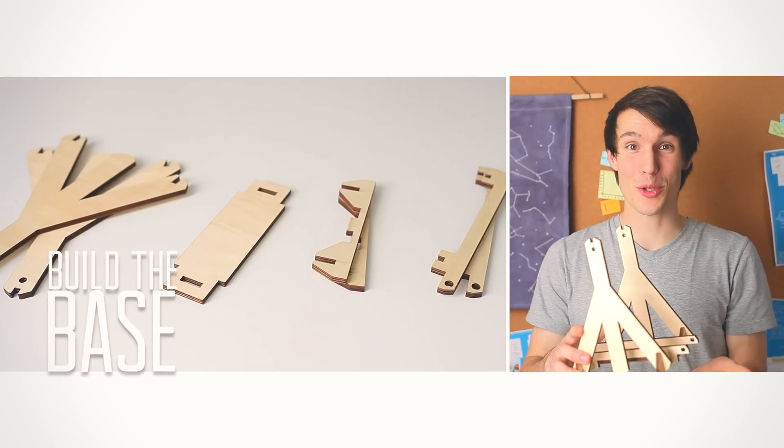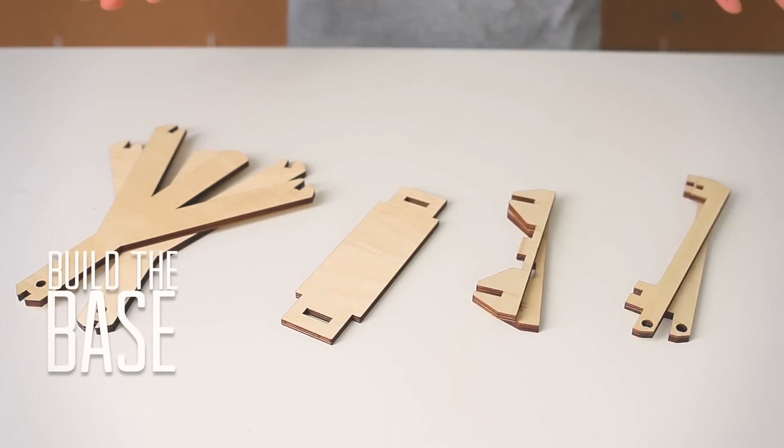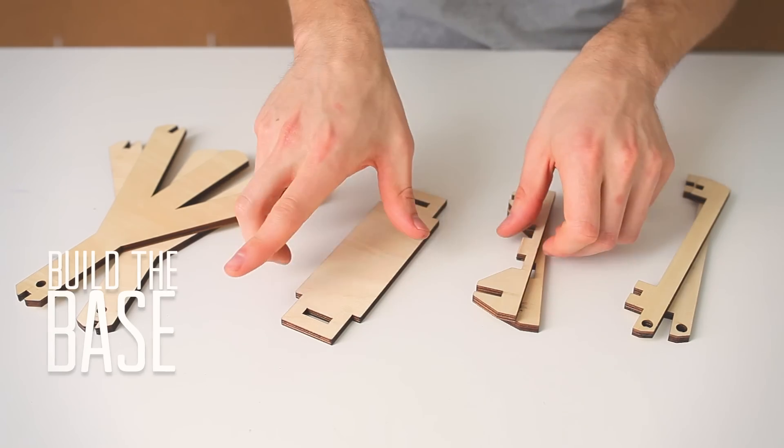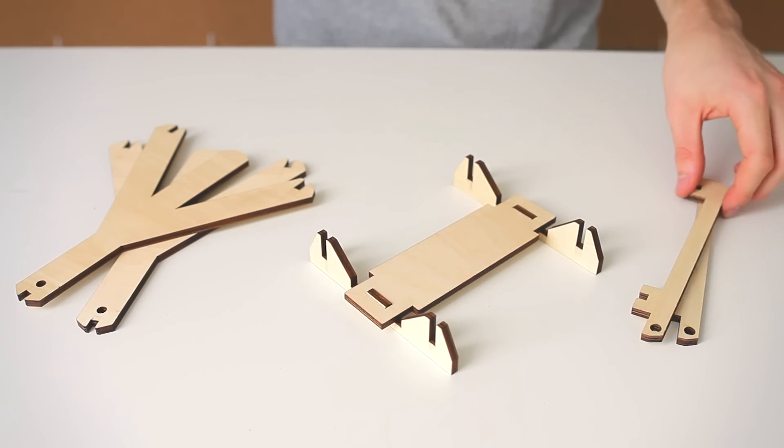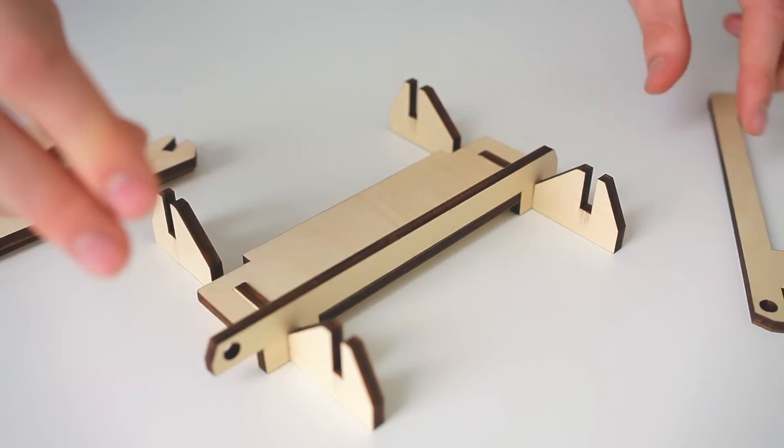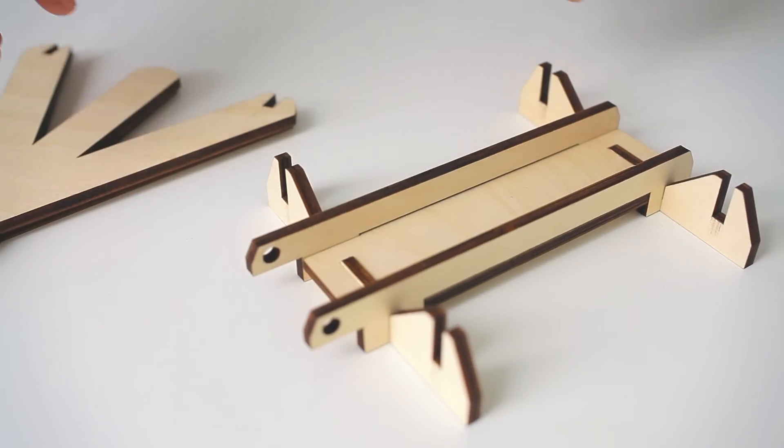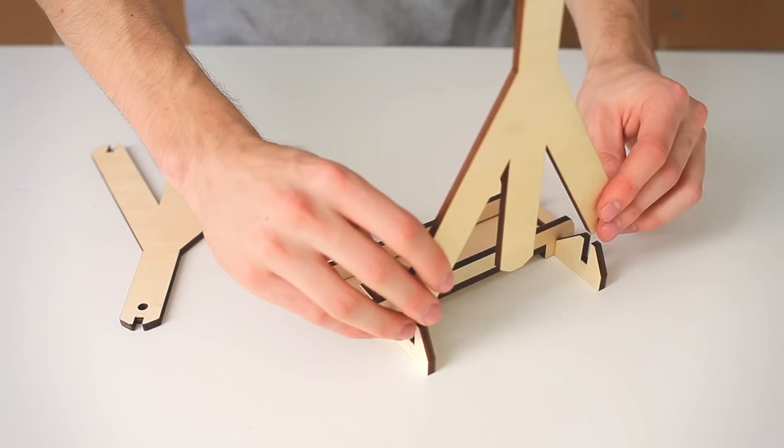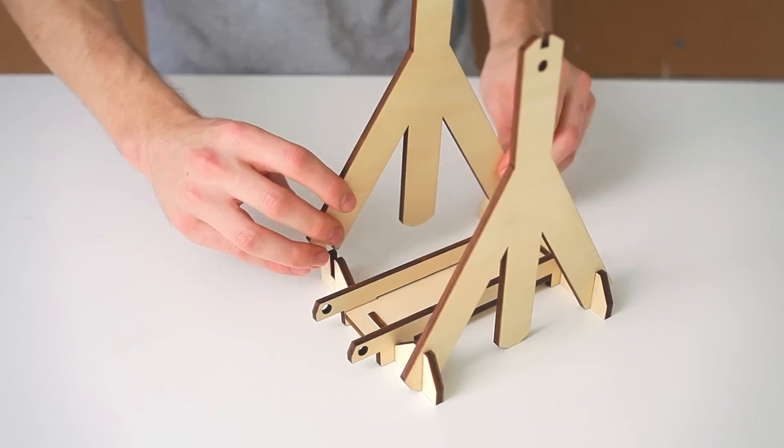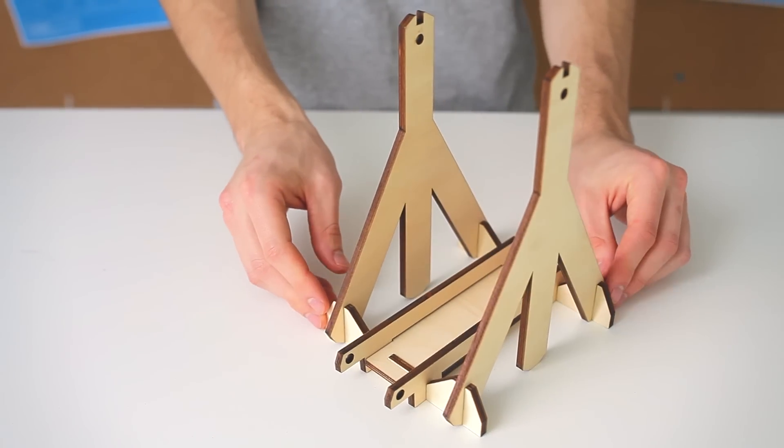The first thing we're going to do is build our trebuchet base. Let's start with the three pieces in the center. I'm going to slot them together like so. Then we're going to take these two pieces and put them on the sides like this. What we did is we just made the chute that the ping pong ball is going to slide through. Add these side support pieces and slide them in. Base is done.